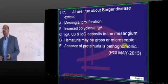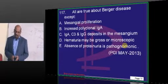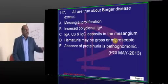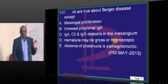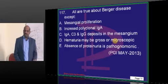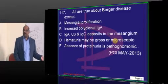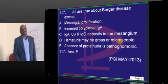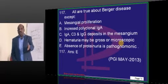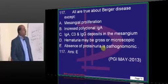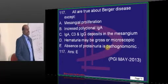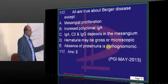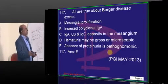Berger's disease, also called IgA nephropathy. The classical feature is mesangial proliferation. There is an epithelium, endothelium, sub-endothelium, and mesangium. Mesangial proliferation occurs, and polyclonal IgA is the immunoglobulin that is multiplied. IgA, C3, and IgG are the ones which deposit in the mesangium.